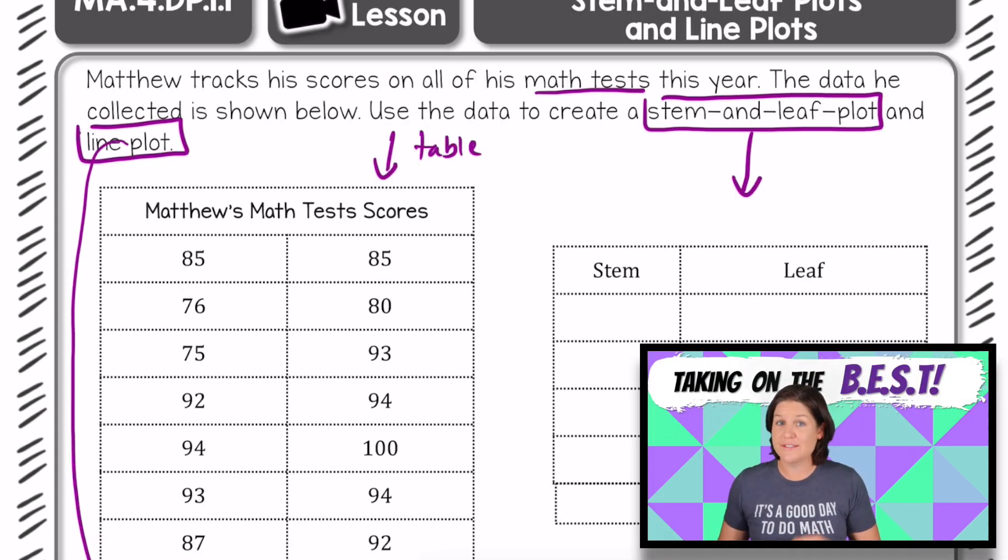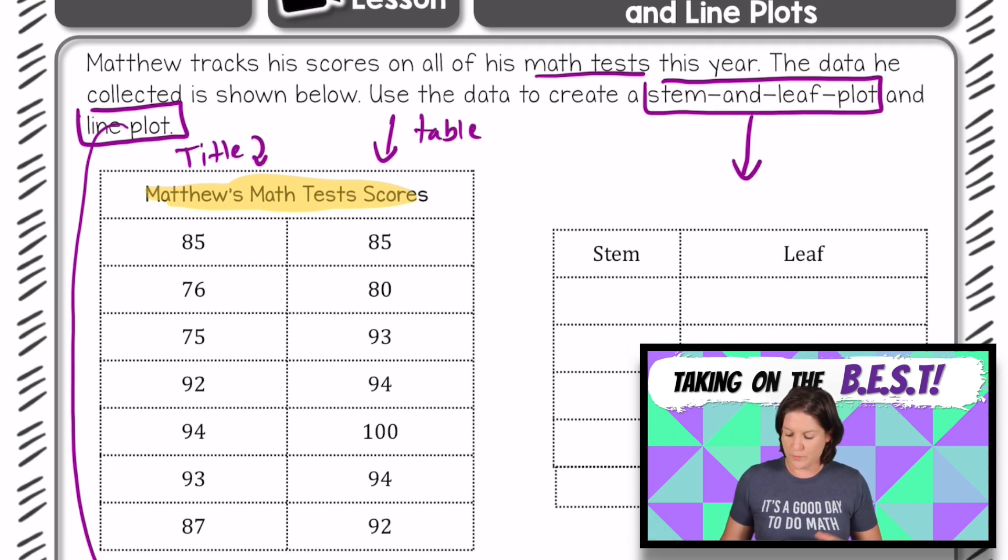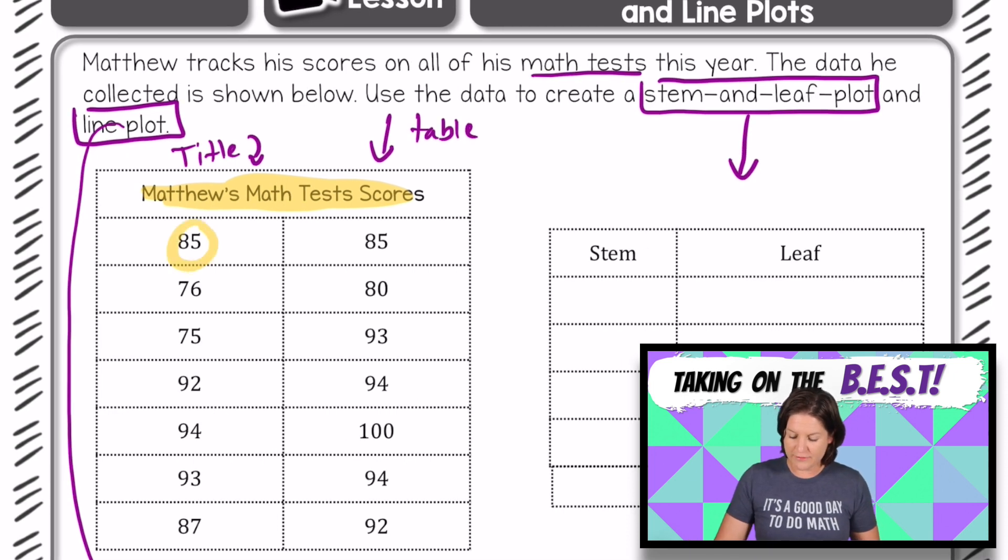The directions say that Matthew tracks his scores on all of his math tests this year. The data he collected is shown below. Use the data in this table to create a stem and leaf plot and a line plot. First things first, let's take a look at the table to see what his test scores were. This right here is the title, Matthew's Math Test Scores. It looks like he received an 85, 76, 75, 92, 94, 93, 87, and so on.